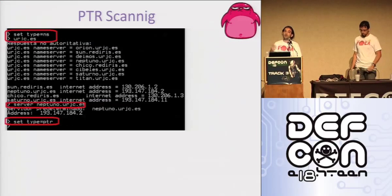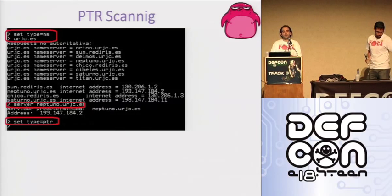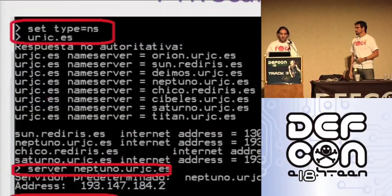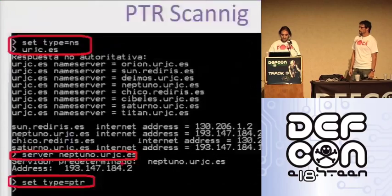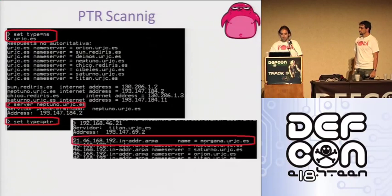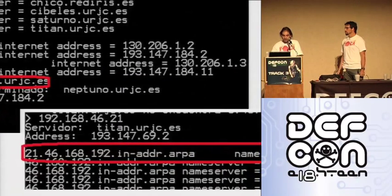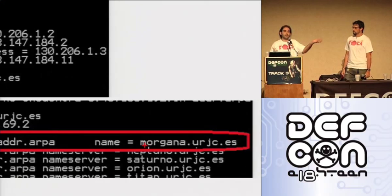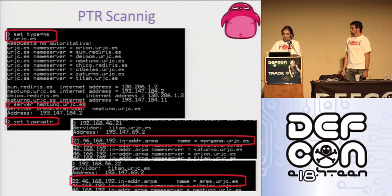Another feature we added to FOCA is PTR scanning. The idea is that once you are able to discover an internal IP address of an internal network, it's possible to connect against the internal DNS, change the query type to PTR, and scan the internal network segment. In this example with my university — they love me — we look for the internal DNS, we change the DNS to Neptuno, and we change the query type to PTR. Since that moment we can throw queries to that DNS. In this example, it's the internal IP address 192.168.46.21 and the internal server is responding with the name of the server.